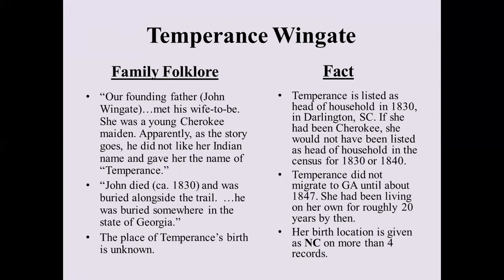There is no fact to be found about it. To disprove this, Temperance is listed as the head of household in 1830 in Darlington, South Carolina. If she had been Cherokee, she would not have been listed as head of household in the censuses for 1830 or 1840. 1850 is about the earliest that they would have recorded Native Americans, but they would not have distinguished as to any particular type or tribe. It wasn't until technically 1890, but we don't have most of those census records — so about 1900 when those distinctions were made.